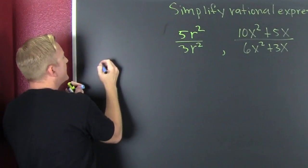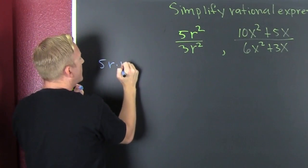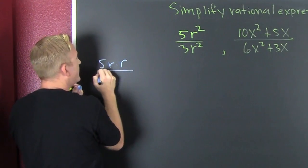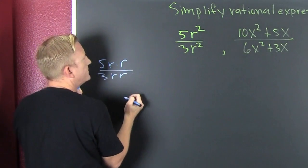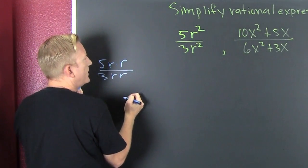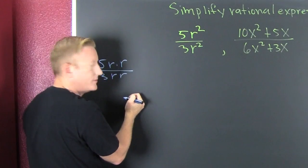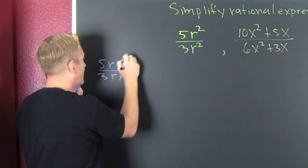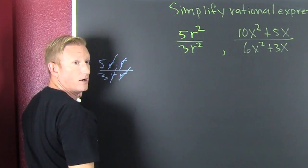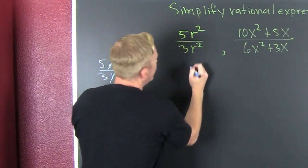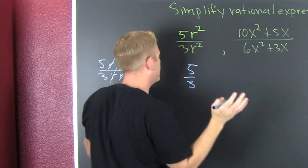What is that? That's 5r over 3r. Anything reduce? R and R — common R's reduce, so what are we left with? We're left with 5 thirds.